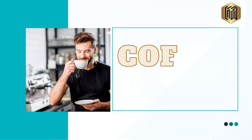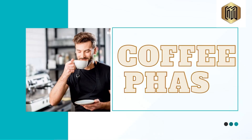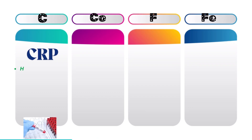The mnemonic to remember the list of acute phase reactants is 'coffee phase.' This mnemonic ties the idea of coffee with a stimulating inflammatory phase, making it memorable. Let's break it down step by step.